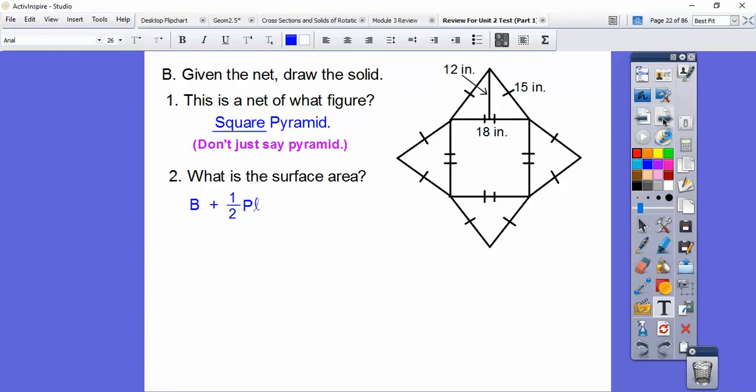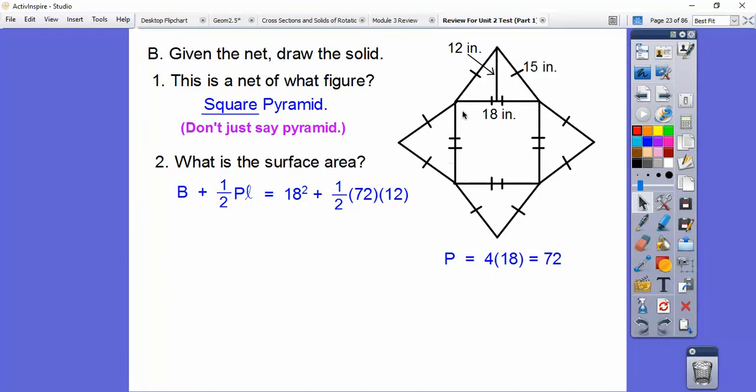What's the surface area of this square pyramid? It's the base plus one-half PL. It's going to be the base plus one-half the perimeter. The perimeter is four of these 18s. That's 18 squared. And then the L is this thing right here. This is the slant height, the height of these triangles. Remember, a triangle is one-half base times height. We can do one-half the perimeter times this height, and that's called our slant height. Don't forget to add the base in. We get 756 inches squared.